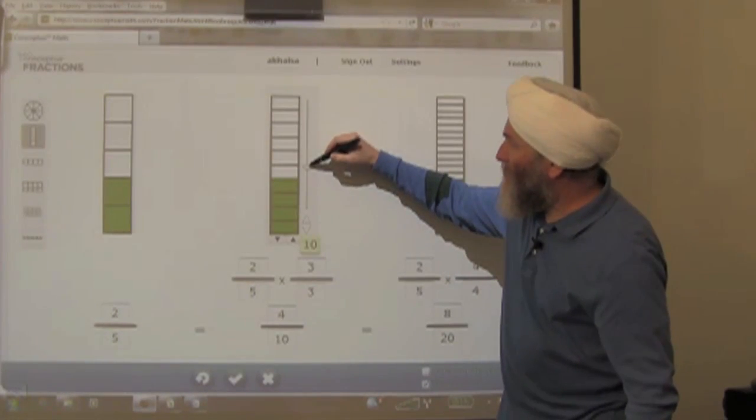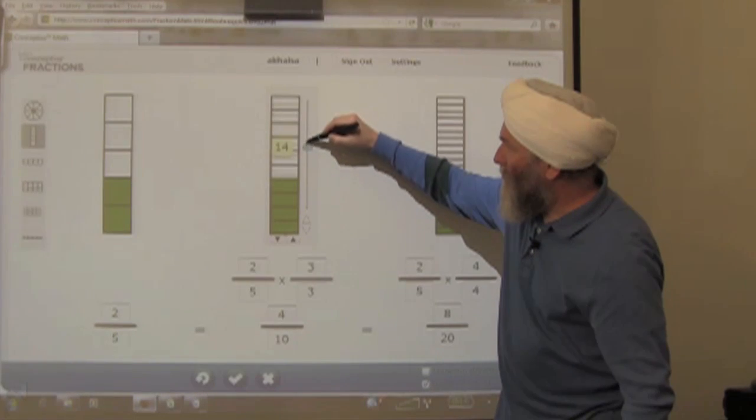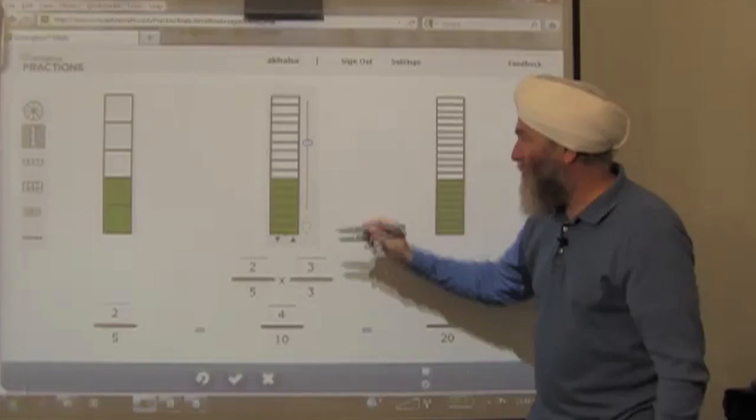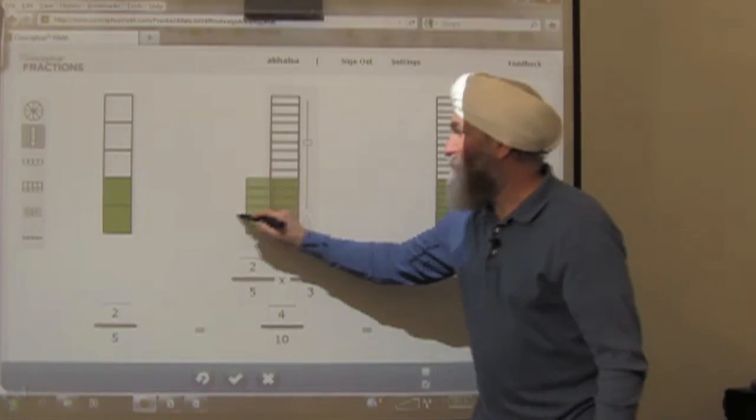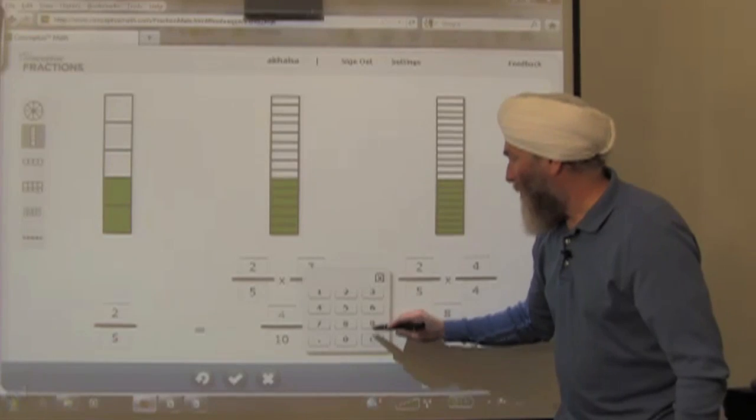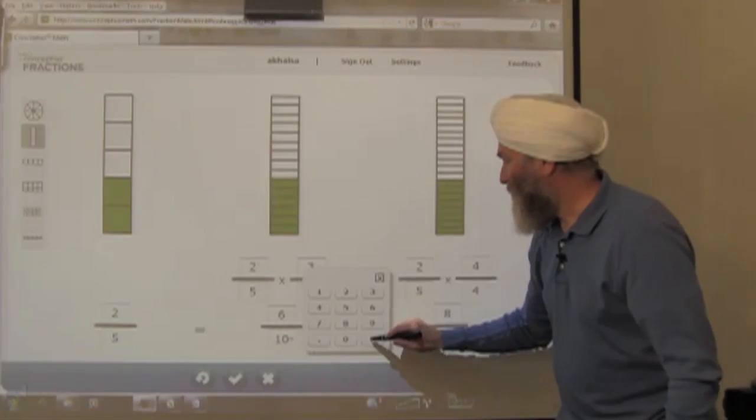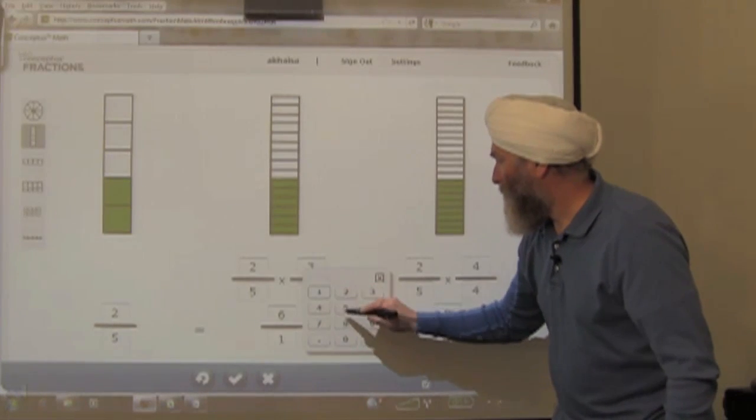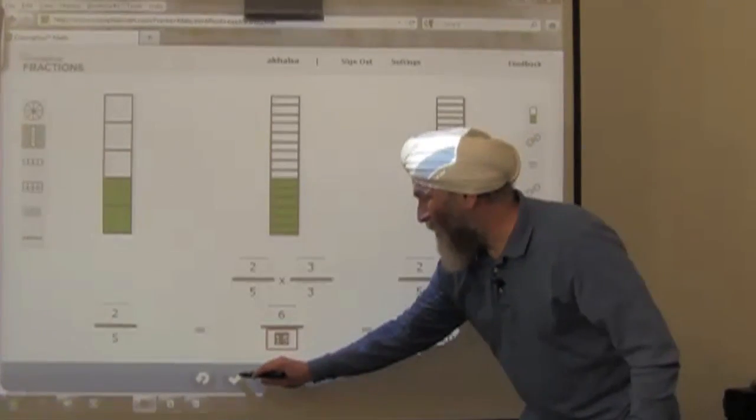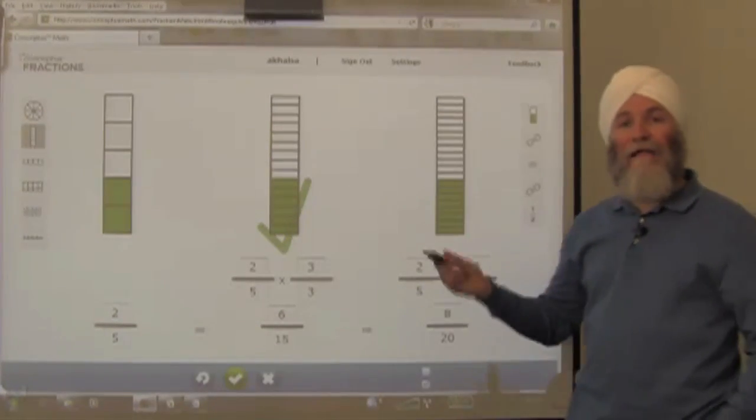So what we want to have happen is the students understand that we're going to end up with three times the number of equal parts, three times the number of shaded parts. We still have an equivalent fraction. And then they can render that fraction as six-fifteenths. The software does allow for the check work function so they can validate their work.